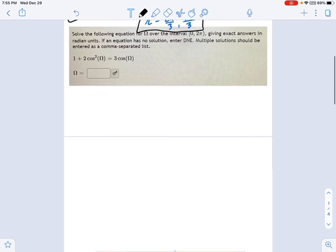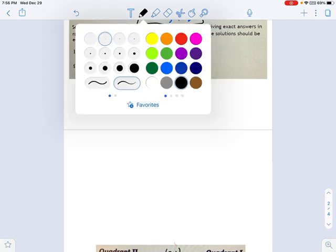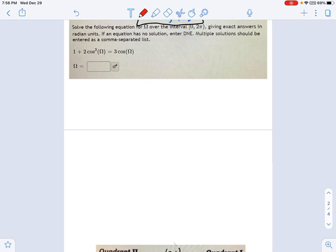Alright, next one. Solve the following equation. Exact answers. Okay. So just the normal thing. And now there's only one function, cosine. So if you want, you can go ahead and do a u substitution here. I think it makes it a little easier on the eyes anyway.